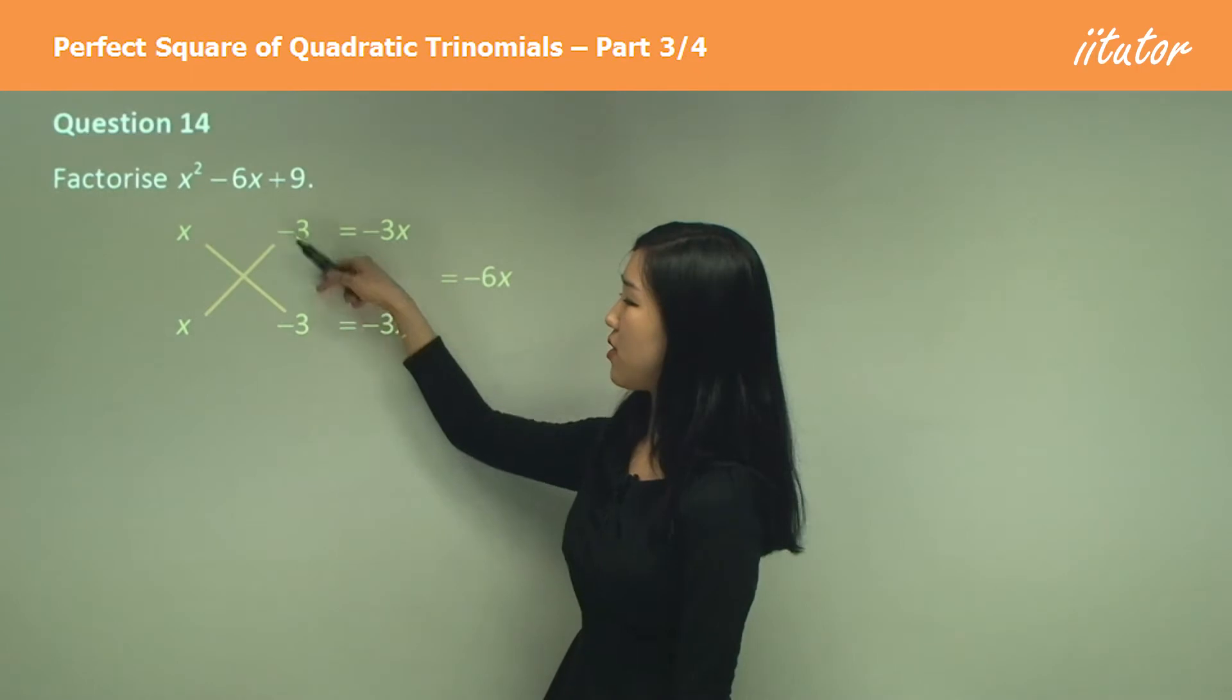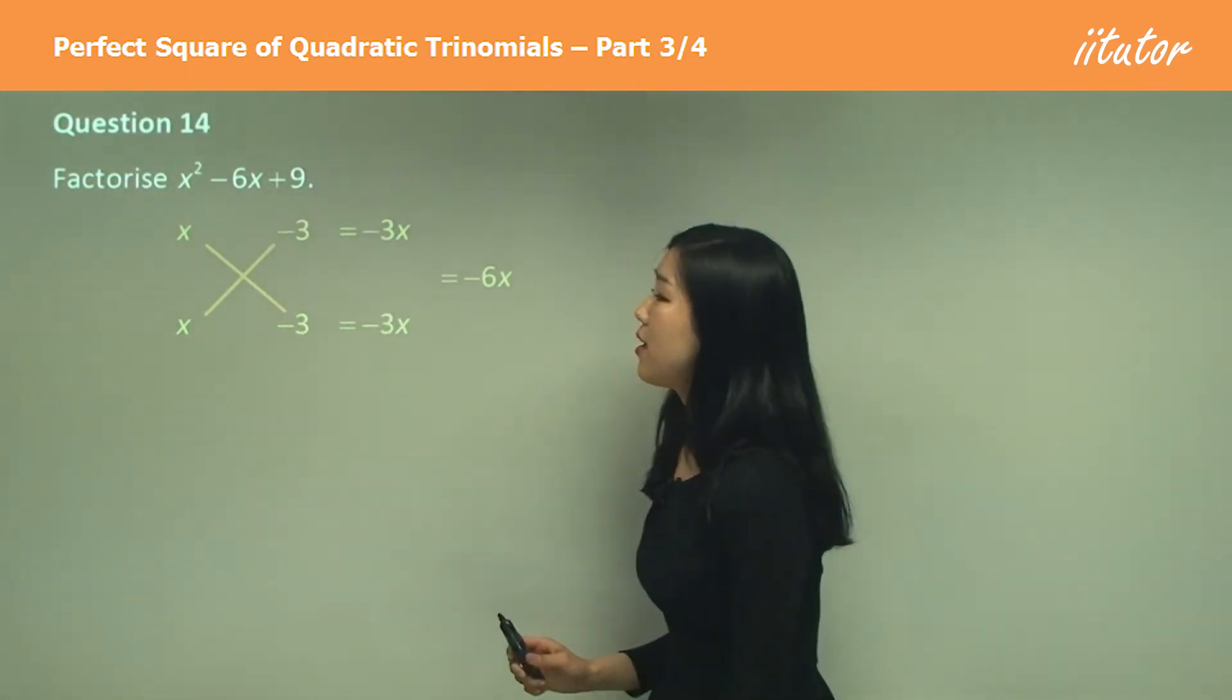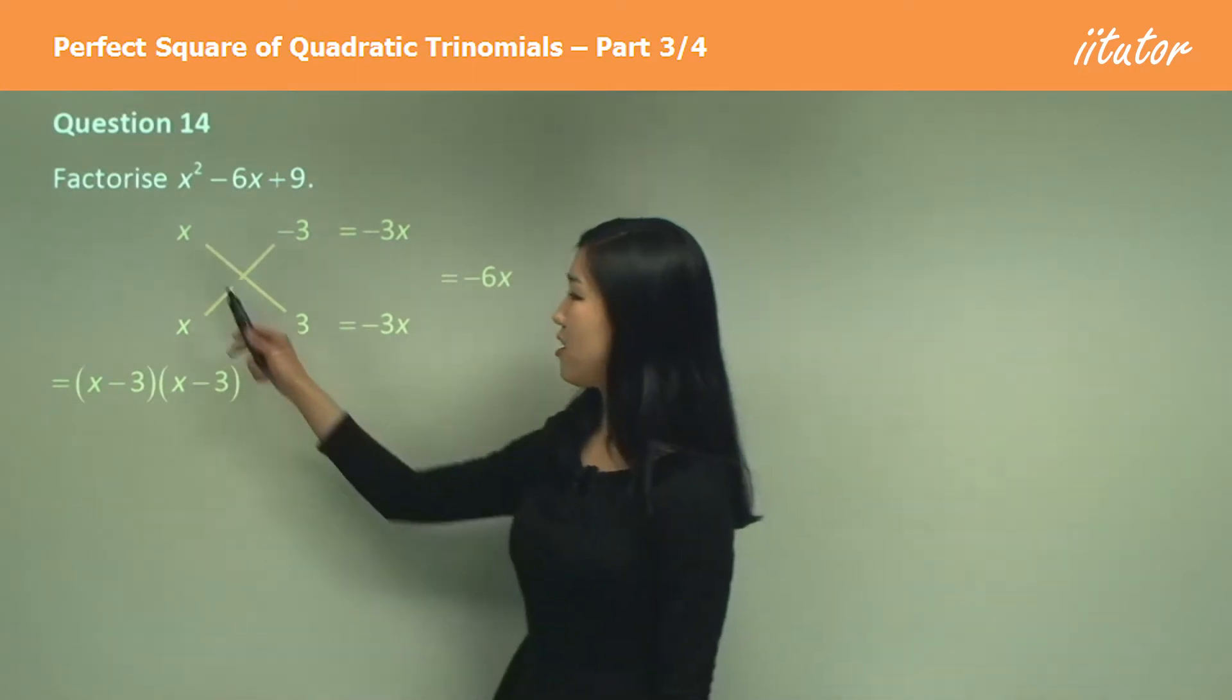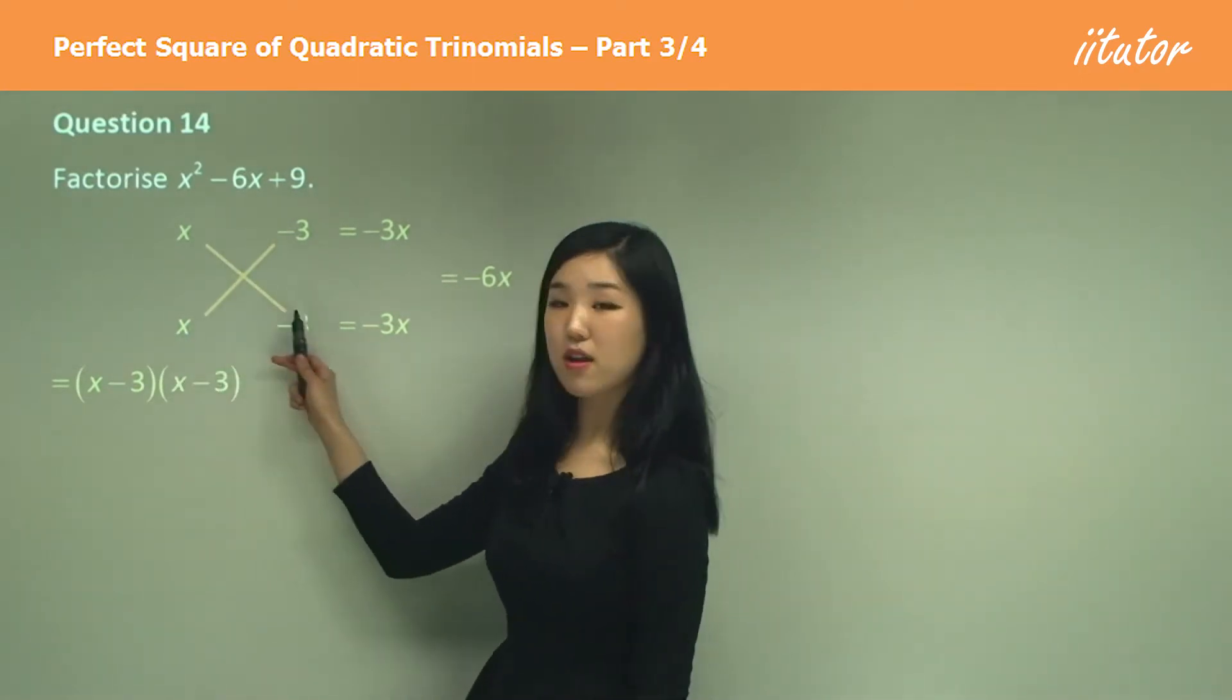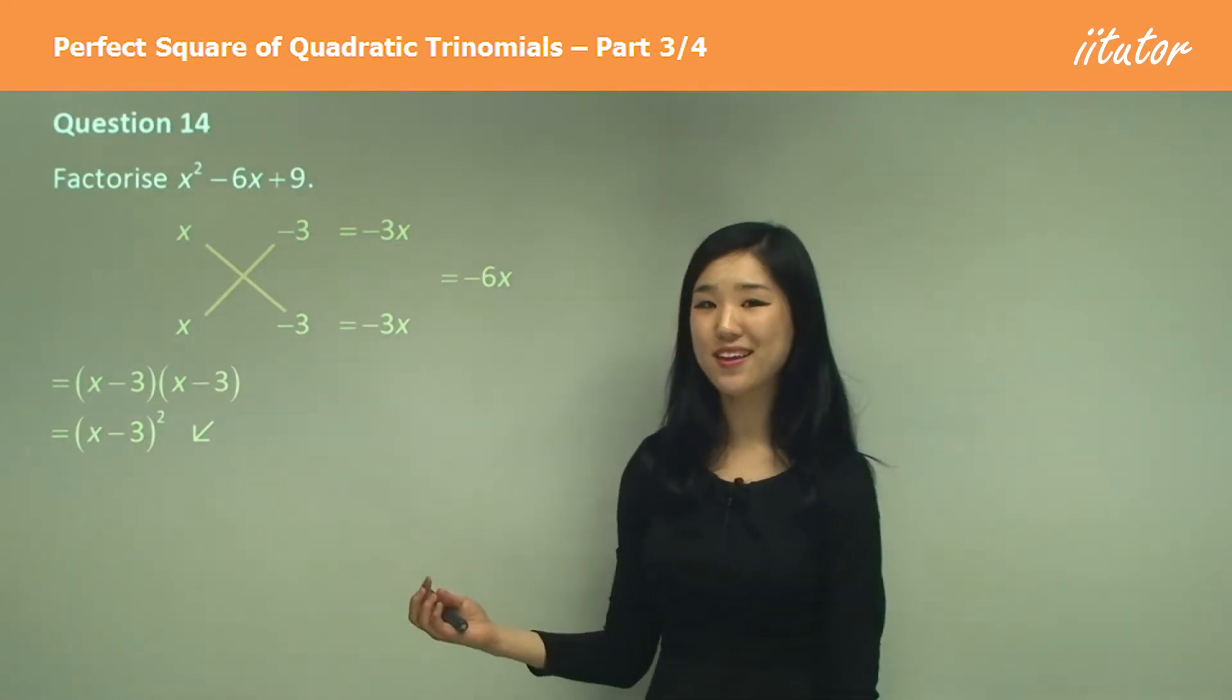So make sure these two are both negative if this happens to be a negative and this is a positive. So we draw our factorization: x minus 3 times x minus 3. We have two of the same kind, so it's x minus 3 squared.